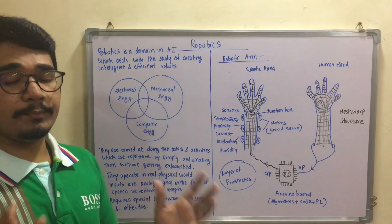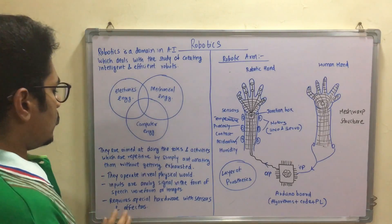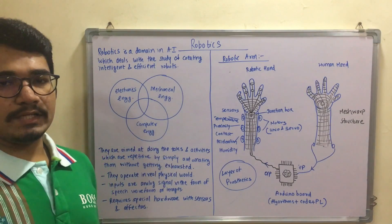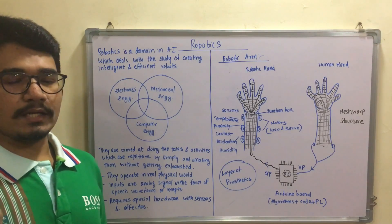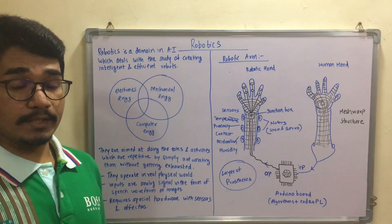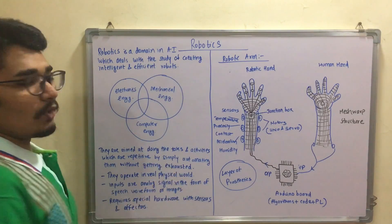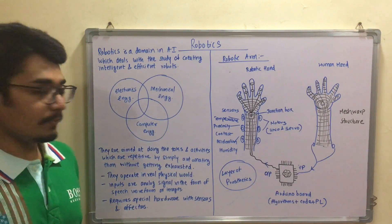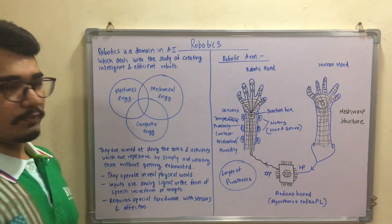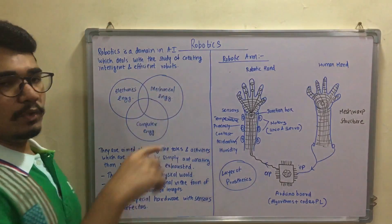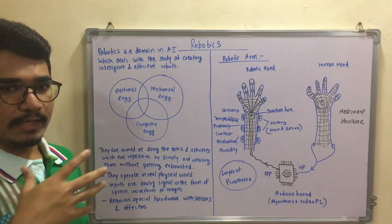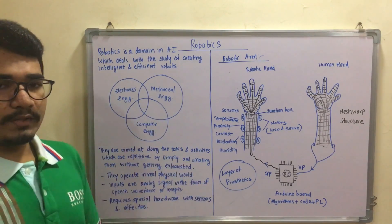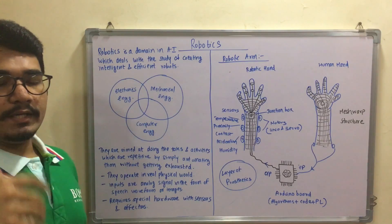These robots are aimed at doing tasks and activities which are done by humans repetitively on a day-to-day basis. At a certain point humans may get exhausted, but robots are made to do it without getting exhausted — simply automating repetitive tasks. If a particular time period is given, the robot will loop for that number of times and will not exhaust, depending upon its battery backup and power supply. Basically, robots are used to automate tasks done by human beings on a day-to-day basis.